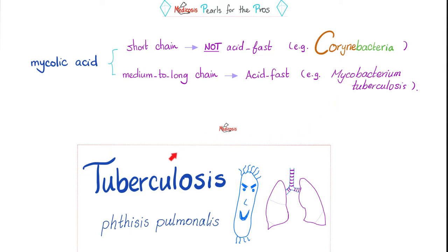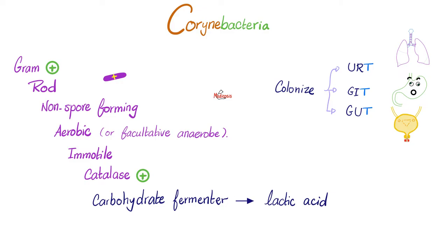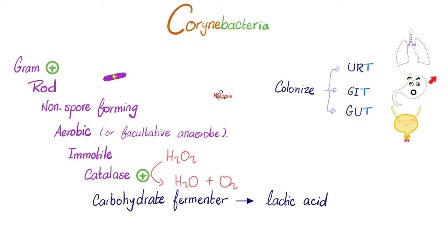Speaking of tuberculosis, I have a specific video about it in my pulmonology playlist. Corynebacteria are Gram-positive rods, non-spore-forming, aerobic or facultative anaerobes, immotile, and catalase-positive — meaning they are capable of converting the harmful hydrogen peroxide into harmless water and oxygen. They can also ferment carbohydrates, releasing lactic acid. Corynebacteria colonize the human upper respiratory tract, gastrointestinal tract, and genitourinary tract.